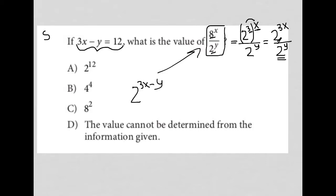And what do you know? 3x minus y is exactly what we have here. So I know that 3x minus y is equal to 12, which means 2 to the 3x minus y is the same as 2 to the 12th, which is option A.